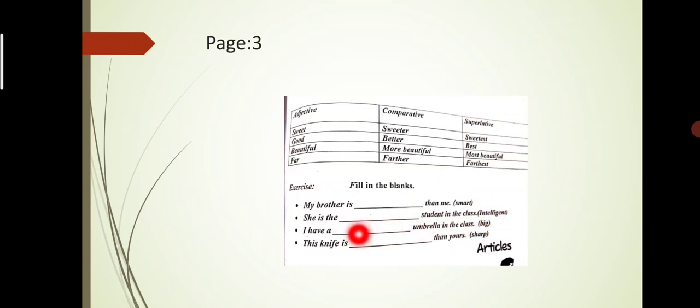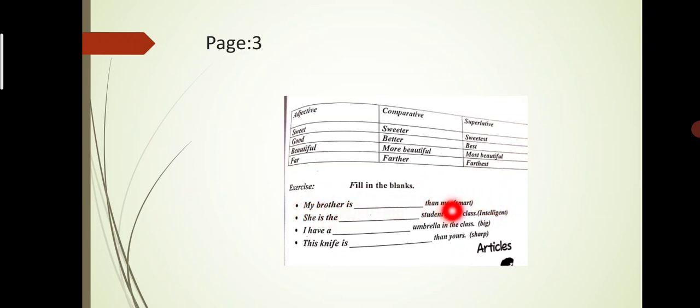'I have a ___ umbrella in the class (big).' We use the comparative form: bigger. So 'I have a bigger umbrella in the class.' Then: 'This knife is ___ than yours (sharp).' Since there is 'than,' we use the comparative form. Sharp takes ER, so: 'This knife is sharper than yours.' This knife is sharper than yours — that is the comparative form.